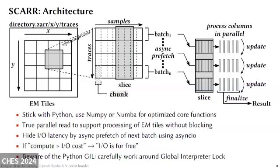For SCAR, we wanted to stick with Python and use NumPy and Numba to optimize our core functionality. Thanks to our use of XAR, we have true parallel read to support the processing of EM tiles without blocking. We spawn a separate Python process for each EM tile, and for each batch of data we process our columns in parallel using threading, updating our metrics as we go. We hide our I/O latency by doing an asynchronous prefetch of our next batch using the Asyncio library. This allows us the principle that if our compute is greater than our I/O cost, then our I/O should be free. We are also carefully working around the Python global interpreter lock so as not to block our computations while reading.